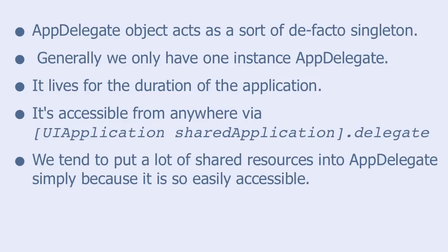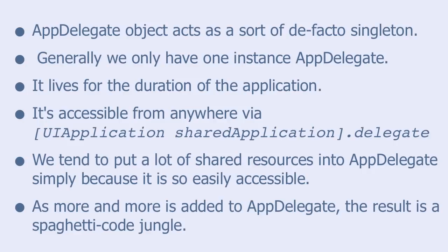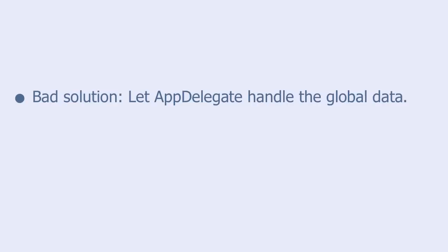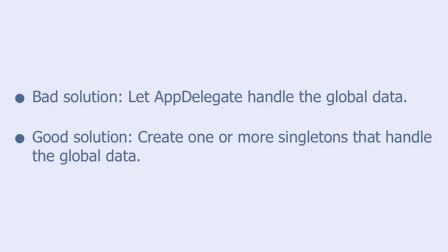We tend to put a lot of shared resources into AppDelegate simply because it is so easily accessible. But as more and more is added to AppDelegate, the result is a spaghetti-code jungle. The bad solution is to let AppDelegate handle all the global data, and the good solution is to create one or more singleton objects that handle the global data.